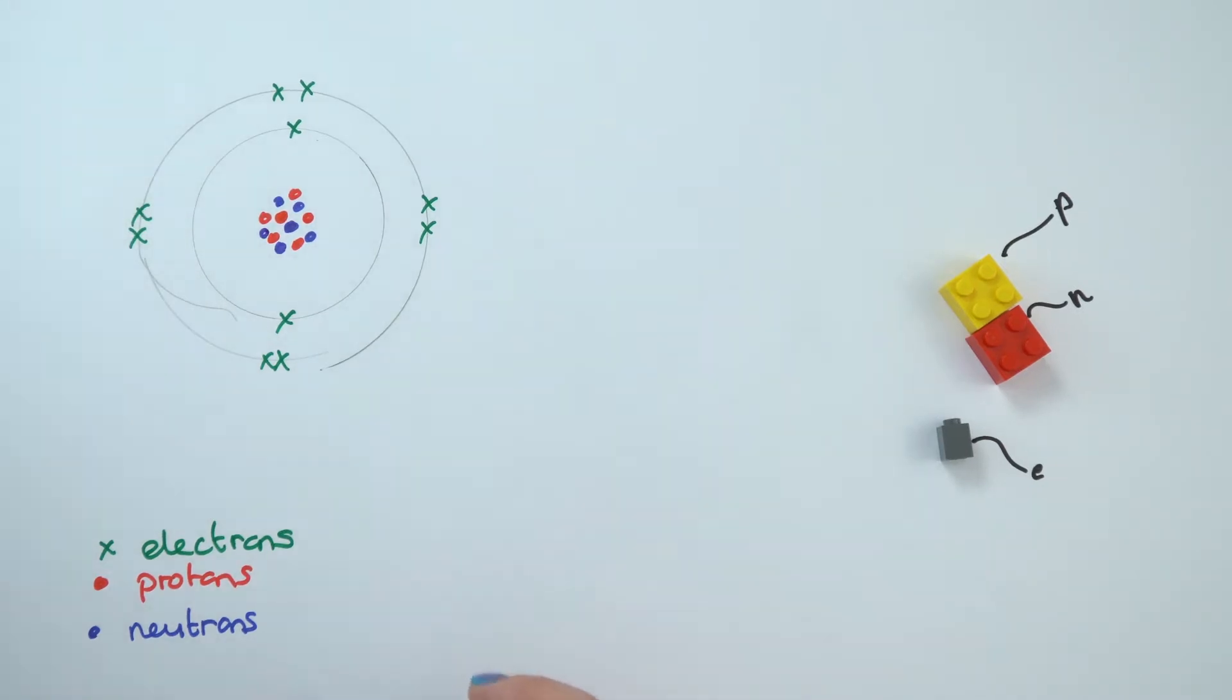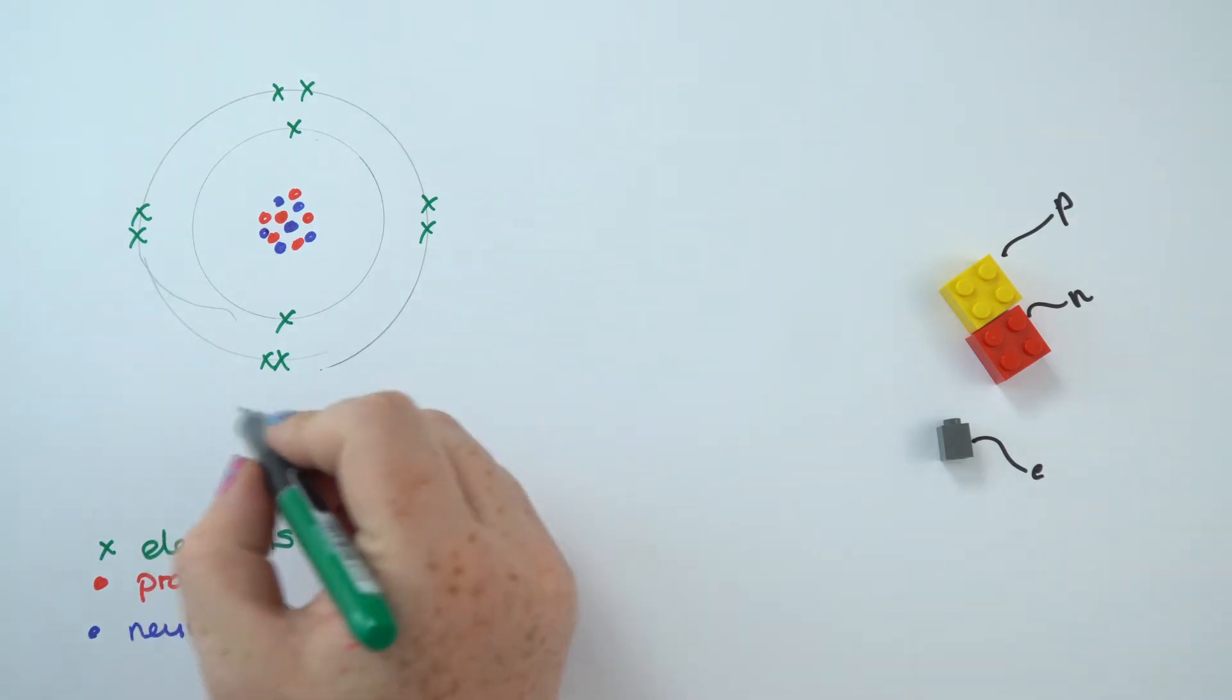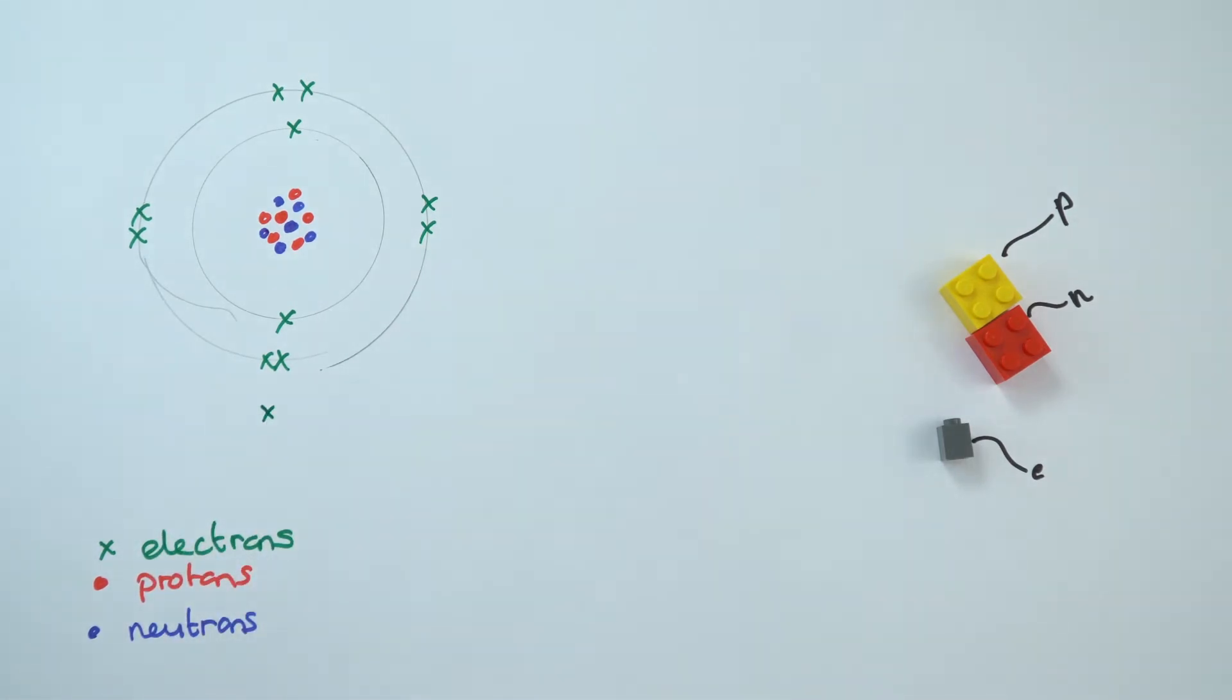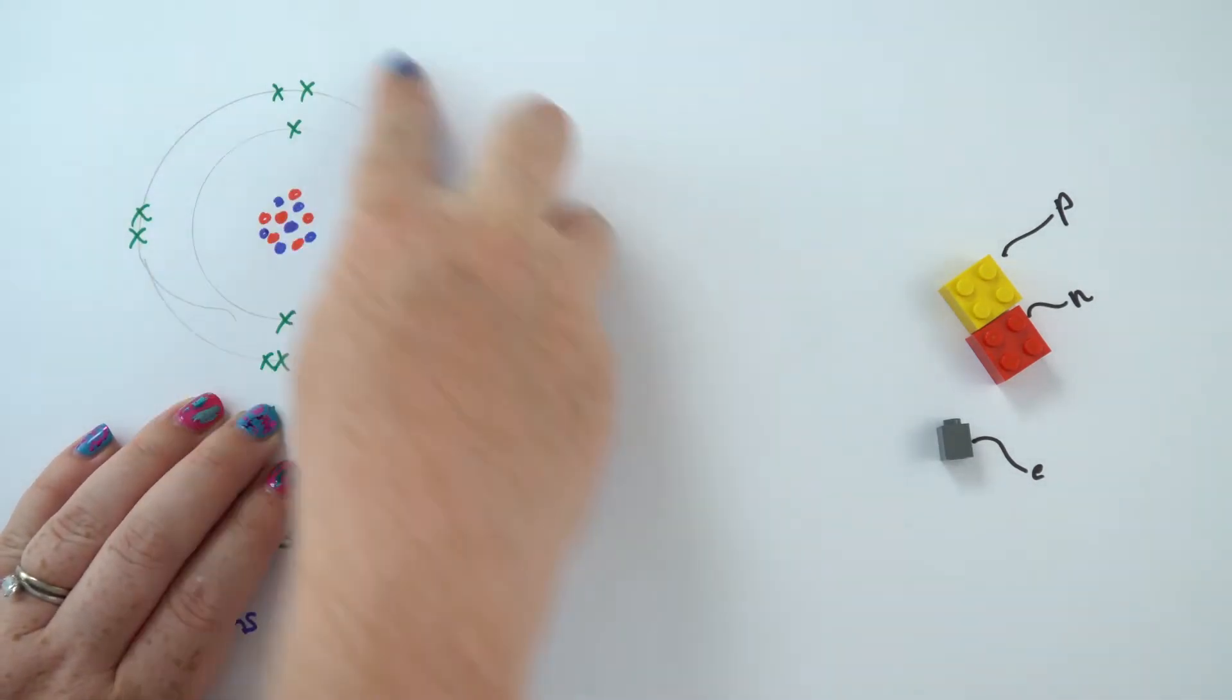Or if it's a group one element and it only has one electron on its outer shell, if I just draw a third shell in there, it will try and lose that electron so that it drops down and has this as the full outer shell.